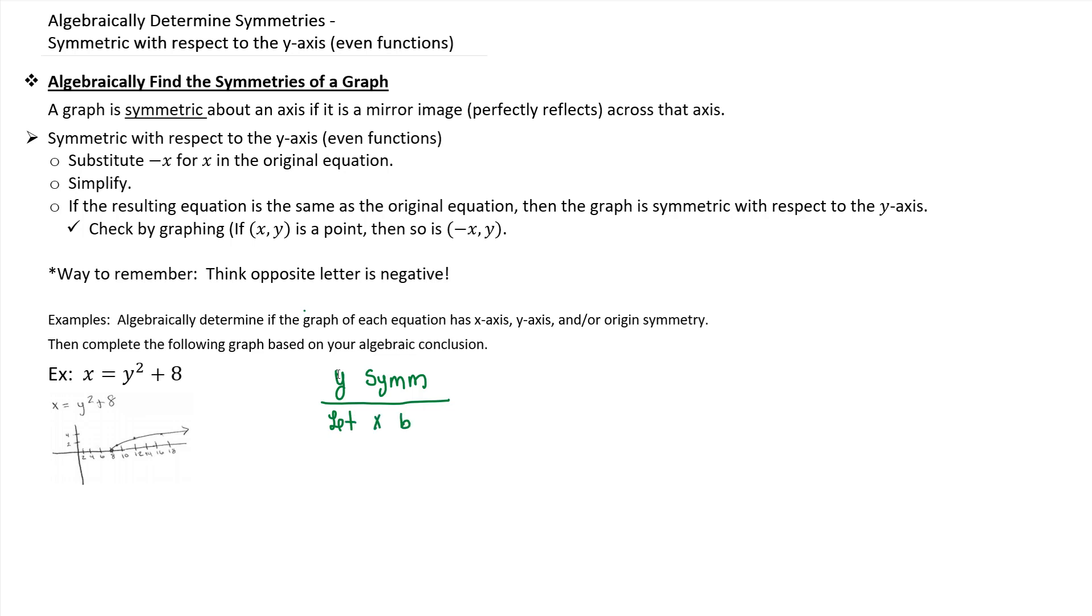And the reason being is if (x, y) is a coordinate on your graph, if you have y-axis symmetry, then also (-x, y) would be on your graph. So what we're going to do is replace x with negative x and see if we get the same resulting equation back. If we do, then we have y-symmetry. If we don't, then we do not have y-symmetry.